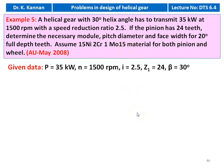We write down the given data: power equal to 35 kilowatt, pinion speed 1500 rpm, speed reduction 2.5, Z1 = 24, and helix angle beta equal to 30 degrees. The speed ratio is given in the problem as 2.5.